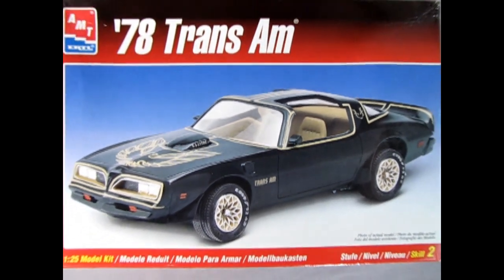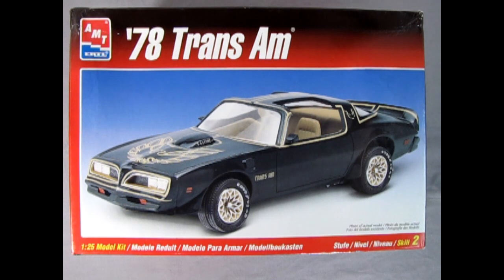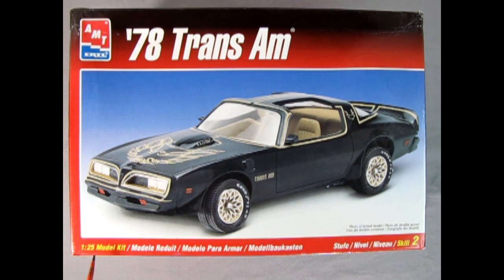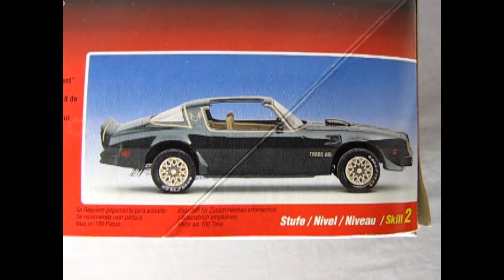Suddenly it's 1978 and we're once again running with the devil as we check out the AMT Ertl 1978 Trans Am model kit. This is a 1:25th scale model kit, skill level 2, comes with a t-top roof with authentic screaming chicken decals. You get a 6.6 liter V8 under the hood and a shaker scoop as well as a deck lid spoiler.